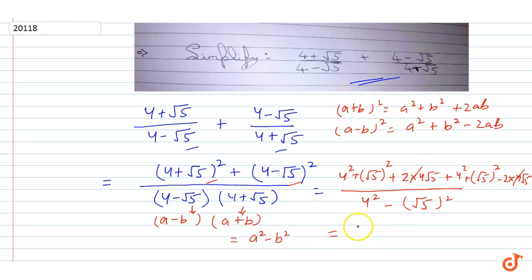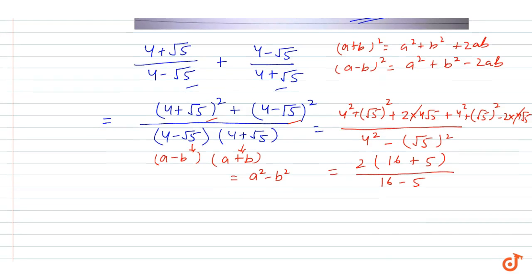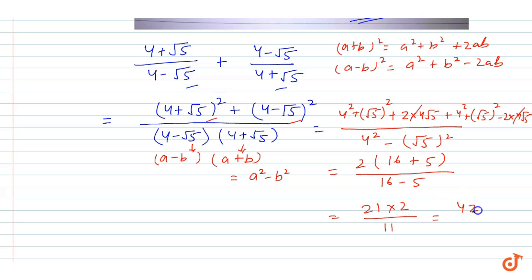The 2ab terms cancel out, so we get twice of (4² + (√5)²) = 2 × (16 + 5) = 2 × 21 = 42, divided by 16 - 5 = 11. So the answer is 42/11.